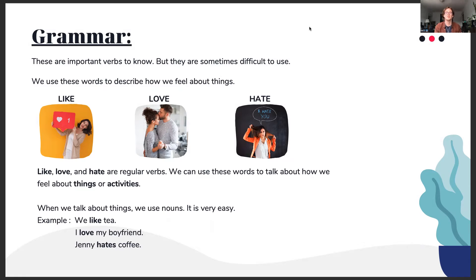Verbs such as like, love, and hate can be very helpful in describing how we feel about certain things. These are what's known as regular verbs — that means that when we're using these verbs, we are usually talking about a noun. It's very easy, so let's give it a try. For example: we like tea; I love my boyfriend; Jenny hates coffee. In each of these sentences, we've identified a subject and a noun, and we are using the regular verb to describe how we feel about the noun in question. So in this first example, we are talking about tea — how do we feel about it? We like it. Not so hard.